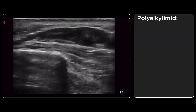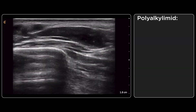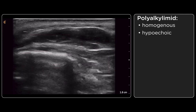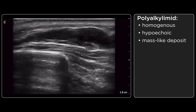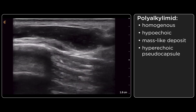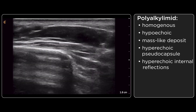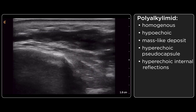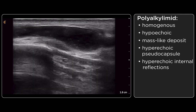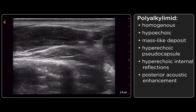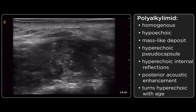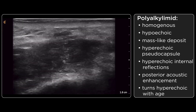This is polyalkylamide filler, a synthetic hydrophilic filler. It appears as homogeneous hypoechoic mass-like deposits with a hyperechoic pseudocapsule of varying thickness. Internal reflections are hyperechoic and indicate semi-liquid contents. Polyalkylamide exhibits slight posterior acoustic enhancement. Older deposits of polyalkylamide become slightly more hyperechoic as the filler dehydrates and hardens.